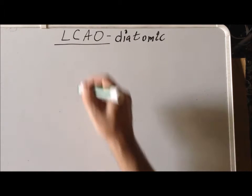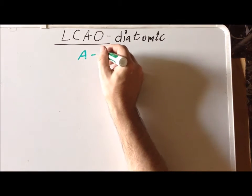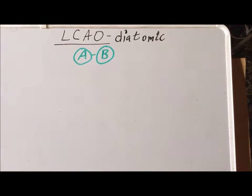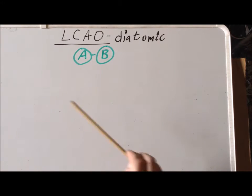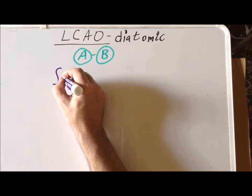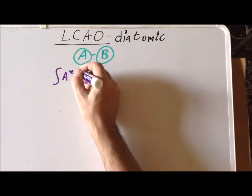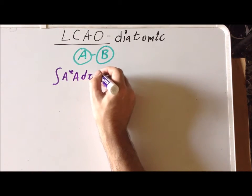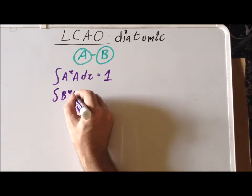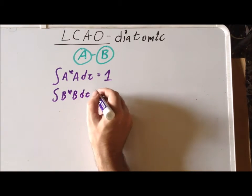So let's assume that we have a diatomic molecule that's formed between two atoms, A and B. Let's also call the atomic orbital found on A simply A, and the atomic orbital found on B simply B. Now since the atomic orbitals are normalized, we can write that the integral of A* A dτ is equal to 1, and that the integral of B* B dτ is also equal to 1.